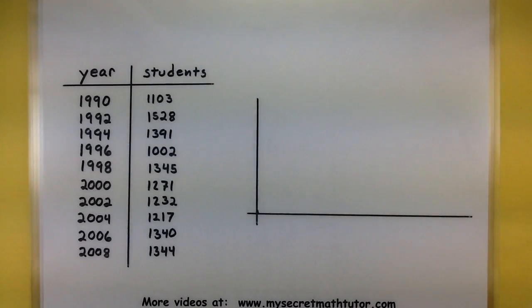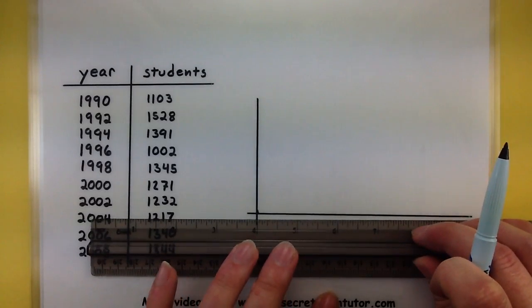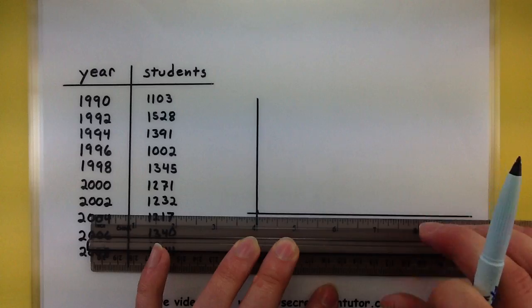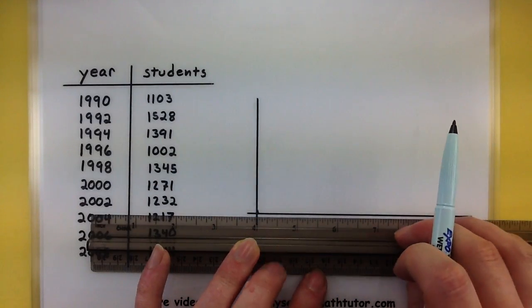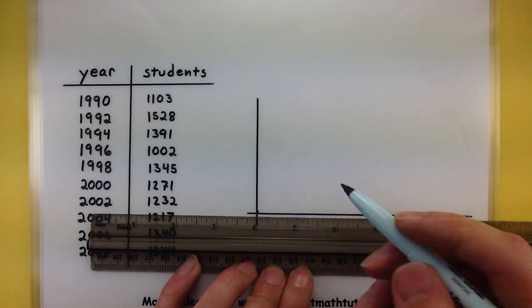For the example, I want to look at how many students are enrolled in a particular school. So I'm looking at the year and how many students are actually enrolled. The very first thing I want to do is probably set up my years along the bottom of my chart here. All of my years are between 1990 and 2008. So I'm going to end up scaling these so I don't have to show all of the years on here.